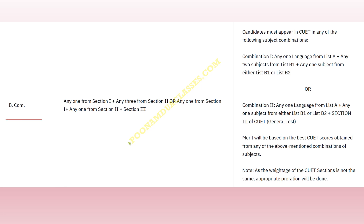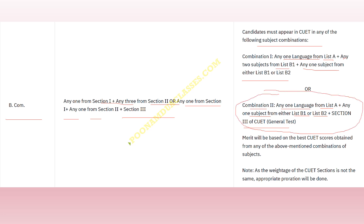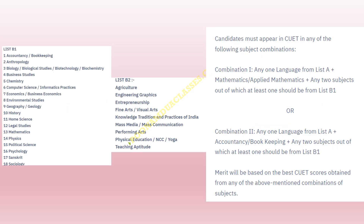This is the combination for BCom Program. Any one language from Section 1, any three from Section 2. Or, any one language from Section 1 plus any one from Section 2 plus Section 3. Candidates must appear in CUET with: any one language from List A, any two subjects from List B1, plus any subject from either List B1 or B2 — I will also provide you List B2. Subject combination 2: any one language from List A, plus any one subject from either List B1 or B2, plus Section 3 general test. If you have prepared well for general test, go for this combination as it can be very scoring.